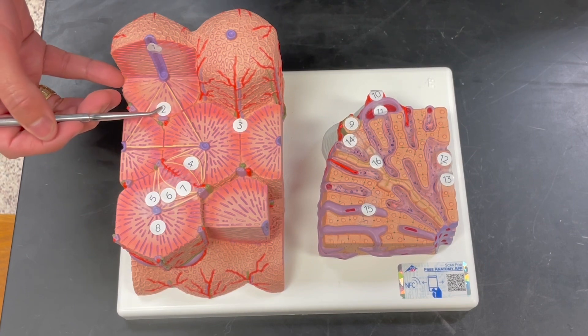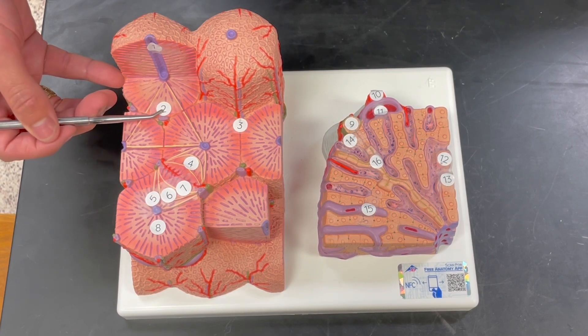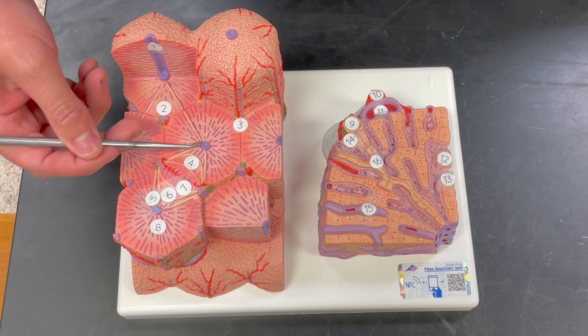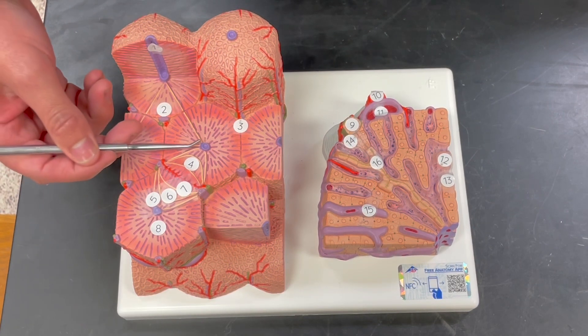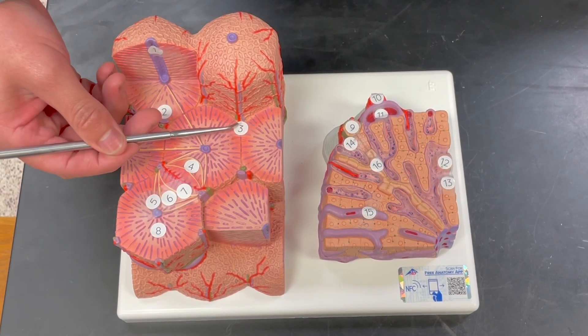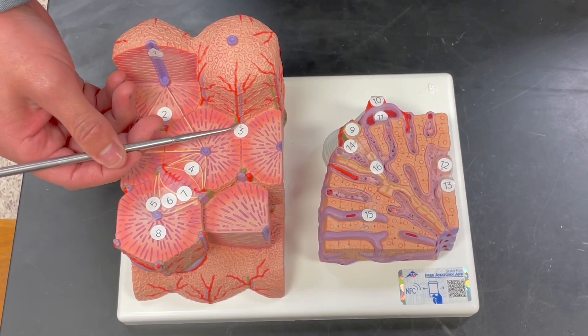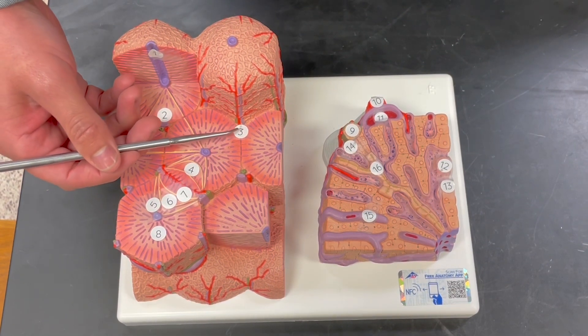Number two, this is what's known as the portal liver lobule. That includes this entire triangle, the portal liver lobule. Number three, this is what is known as the portal canal, which contains the portal triad.